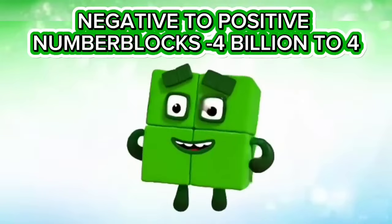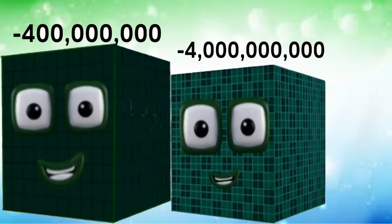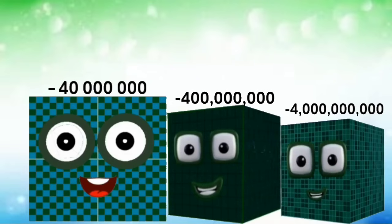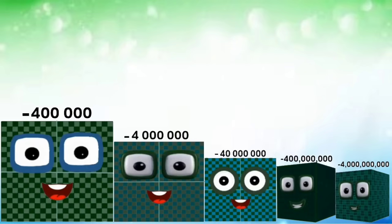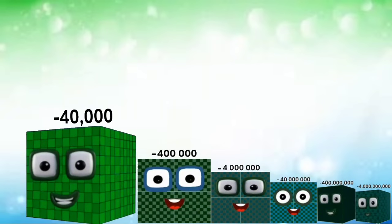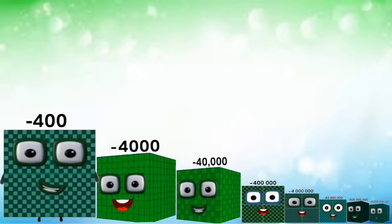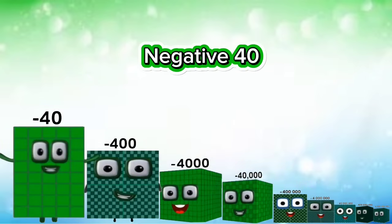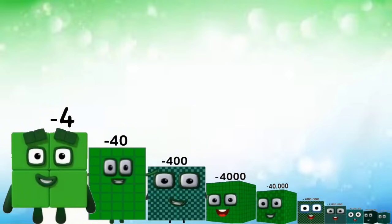Negative to positive Number Blocks — negative 4 billion down to negative 4,000,000. The sequence includes: negative 4 billion, negative 400,000,000, negative 40,000,000, negative 4,000,000, negative 400,000, negative 4,000,000, then negative 400,000,000, negative 40,000,000, negative 4,000,000.